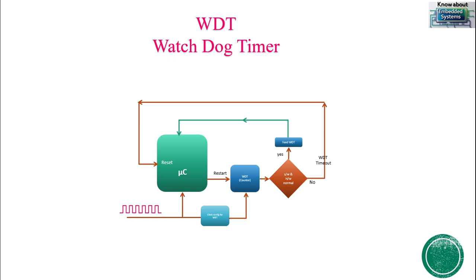If you are developing any embedded system application, it is important to know the role of the watchdog timer and how to configure it. Watchdog timer is basically used as a protecting circuit for the microcontroller. Whenever the microcontroller enters into error conditions or is not working properly, someone has to reset it. If your embedded system is deployed in remote areas, human intervention is not possible, so watchdog timer plays a very important role in resetting the microcontroller.